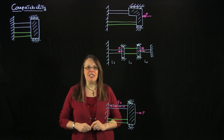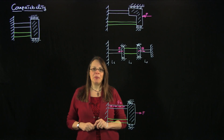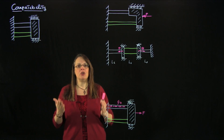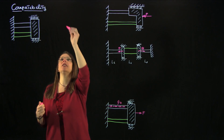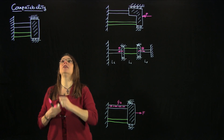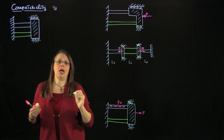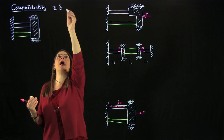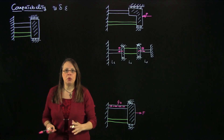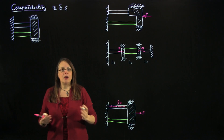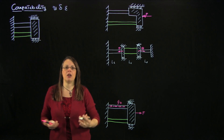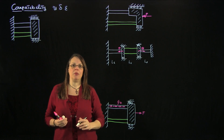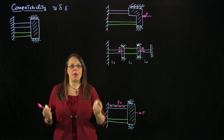So what we're going to talk about now is compatibility. Compatibility are relationships which have to do with geometry — geometric relationships. Compatibility includes all the relationships that connect the displacement field u, to elongation of the bars delta, to the strain in the bar epsilon. So all the relationships which have to do with the geometry of the bar and how the length of the bar changes at different points fall under compatibility. Compatibility are all the geometric constraint equations.